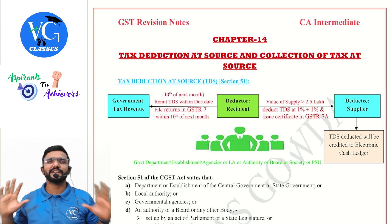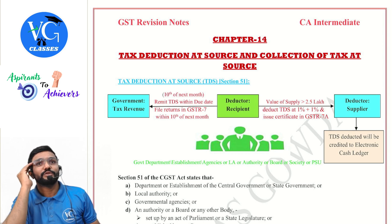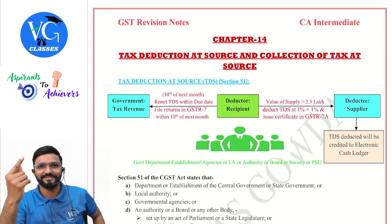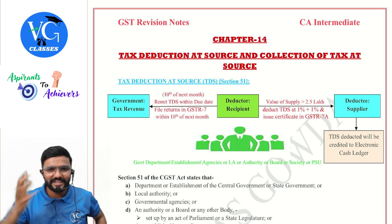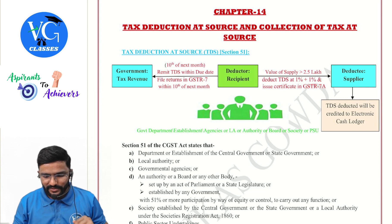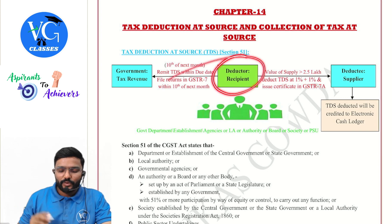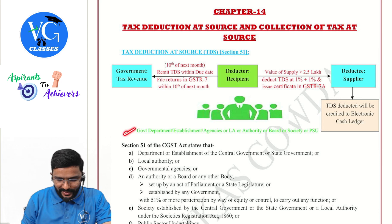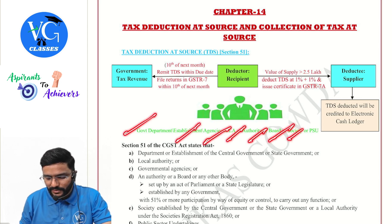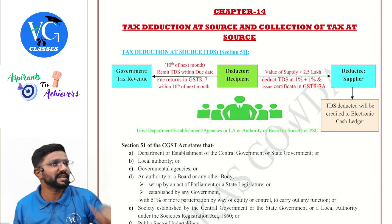It's very simple — don't get scared. TDS under GST has only one section, unlike income tax which has many. Who should deduct TDS? Government departments, establishments, agencies, local authorities, boards, societies, or public sector undertakings — only if they are the payer. They have to deduct TDS from the supplier, who has supplied goods or services to the recipient. While making the payment, the deductor deducts TDS.